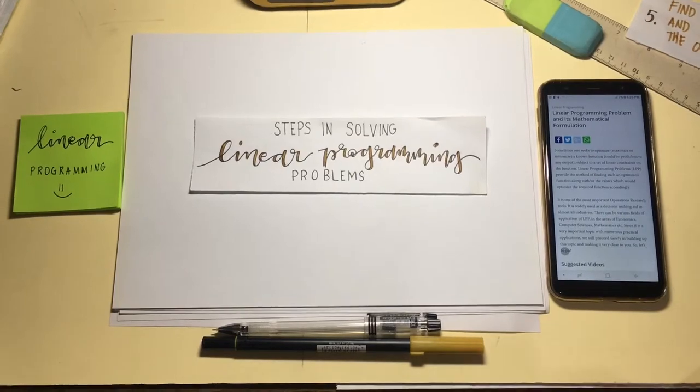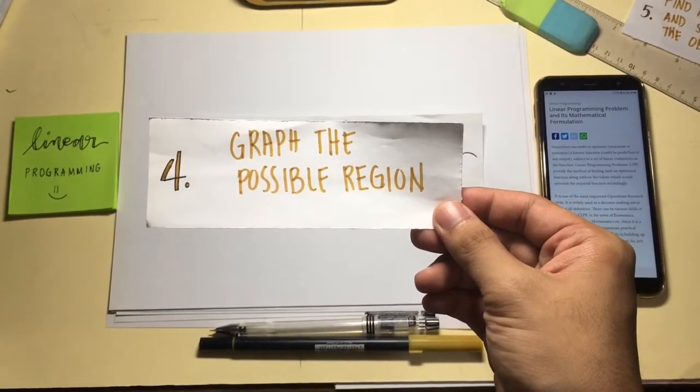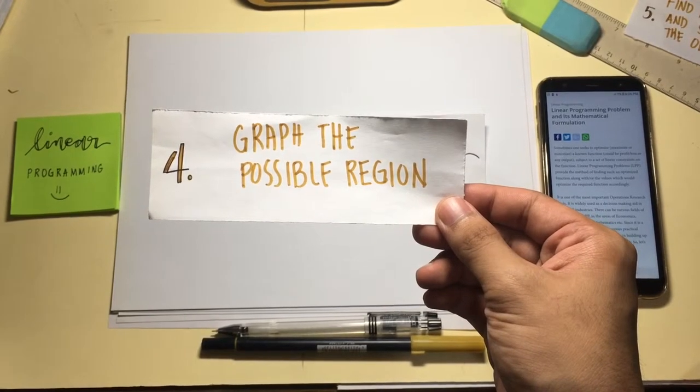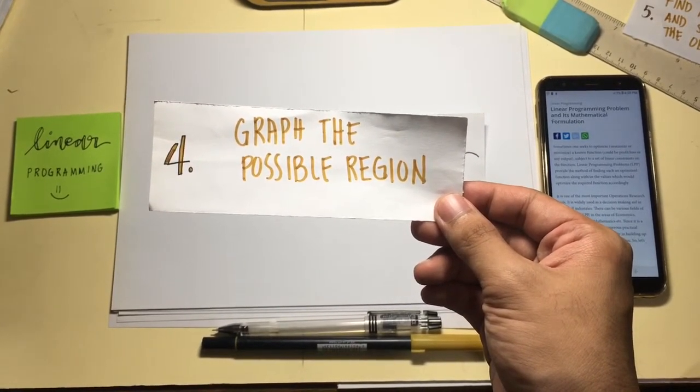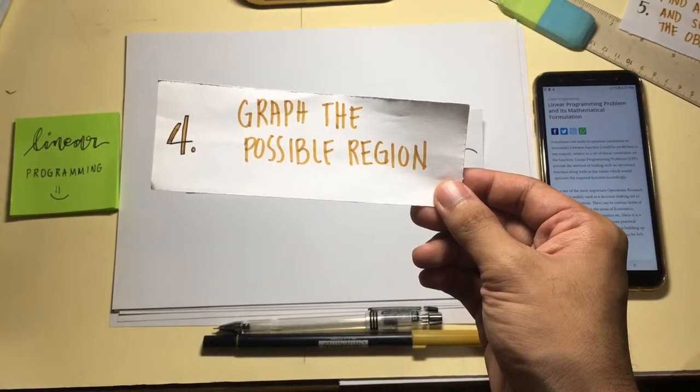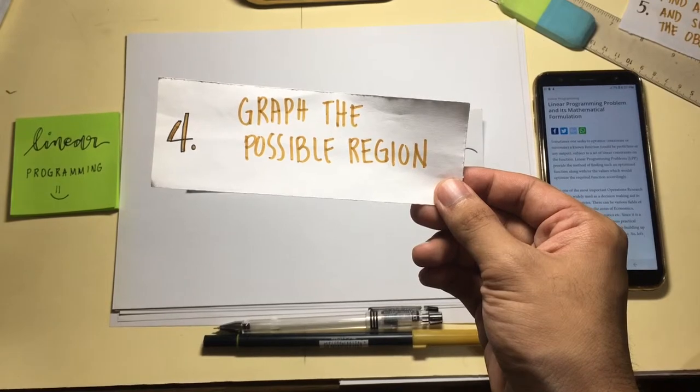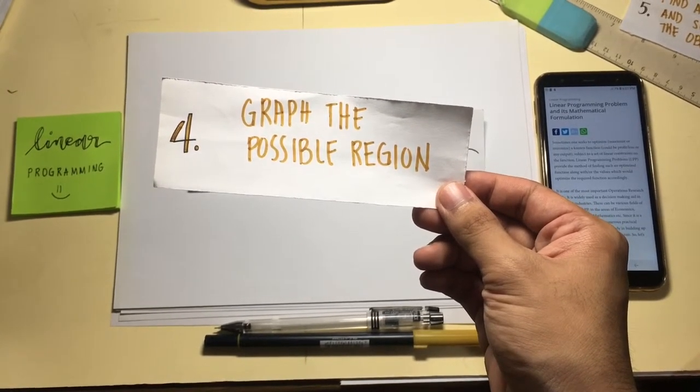Fourth step is to graph the possible region. Remember the constraints in step 2? In this part, you will need to graph these linear inequalities into a graphing calculator software called GeoGebra. This will help you easily locate the region and the points that you will need for the fifth and final step.